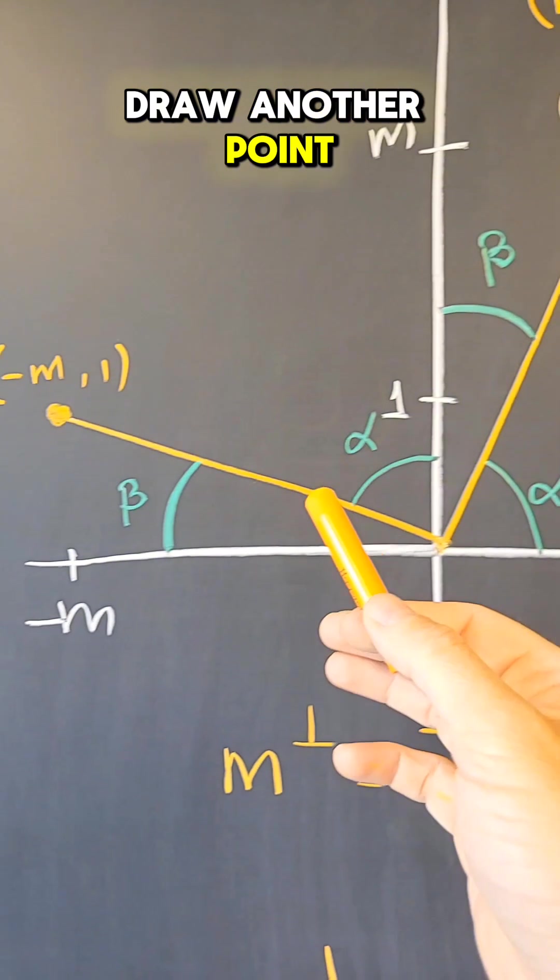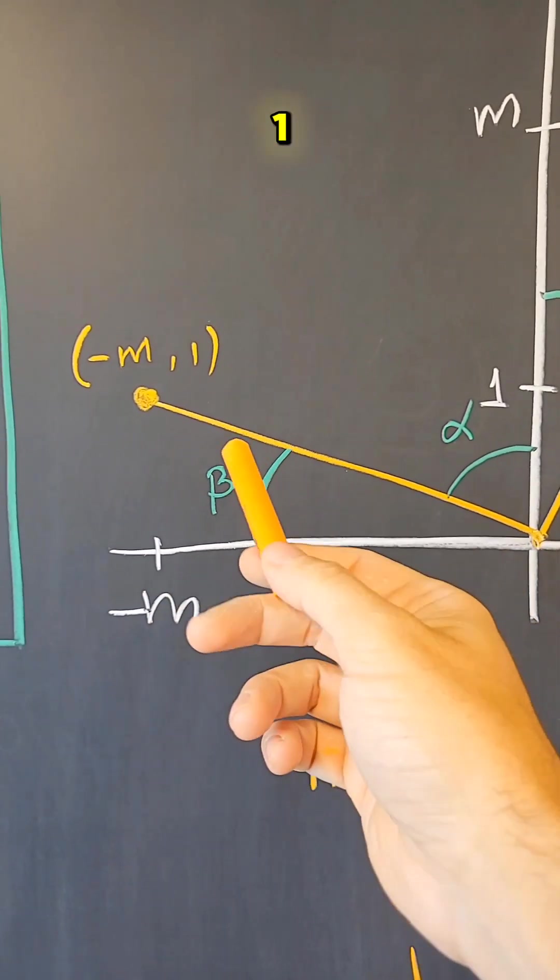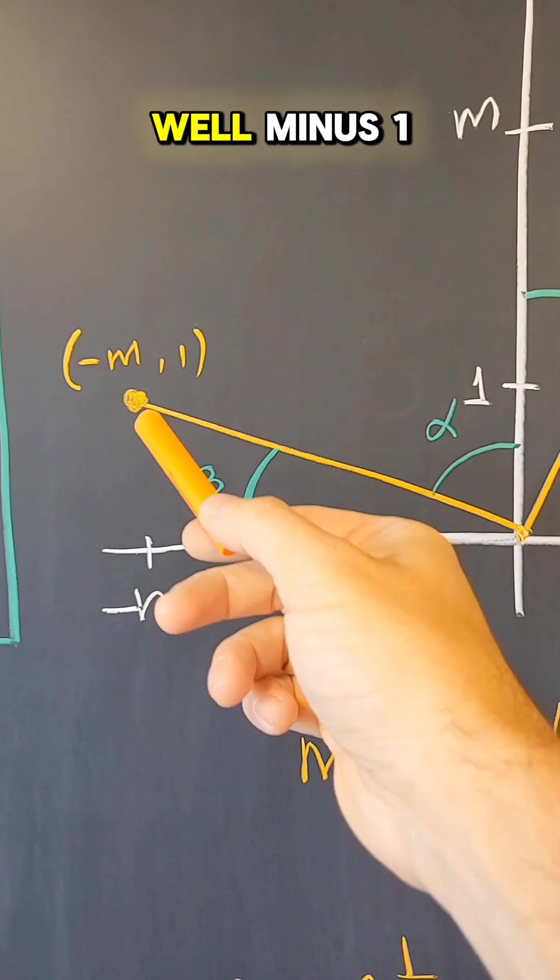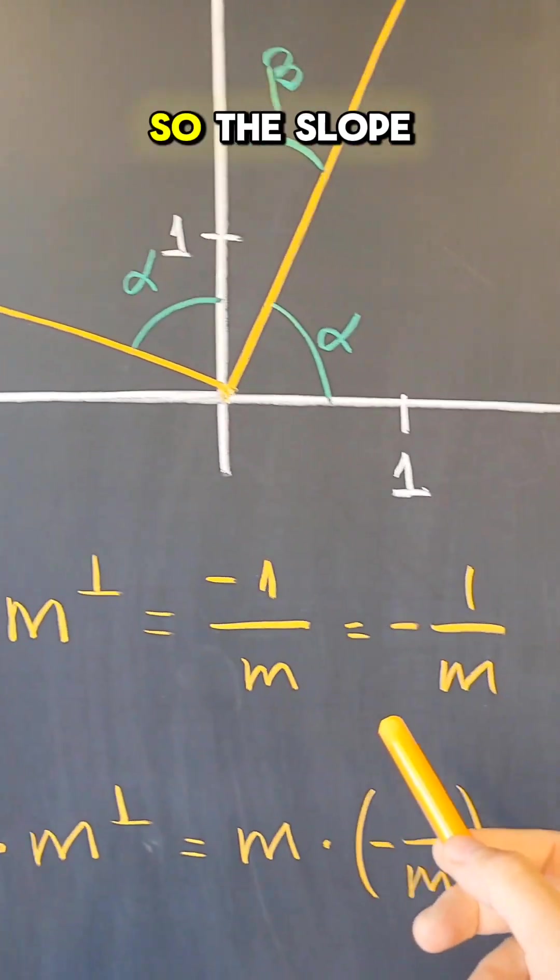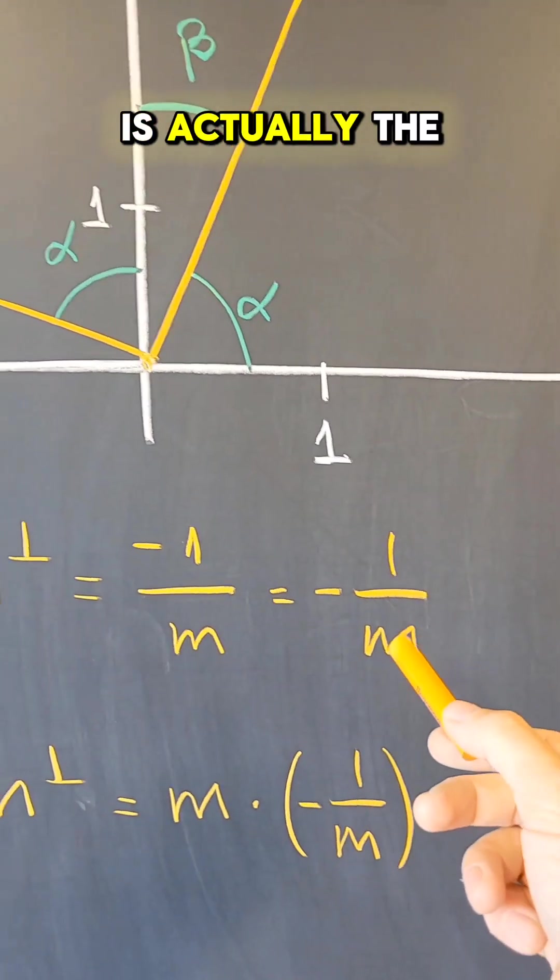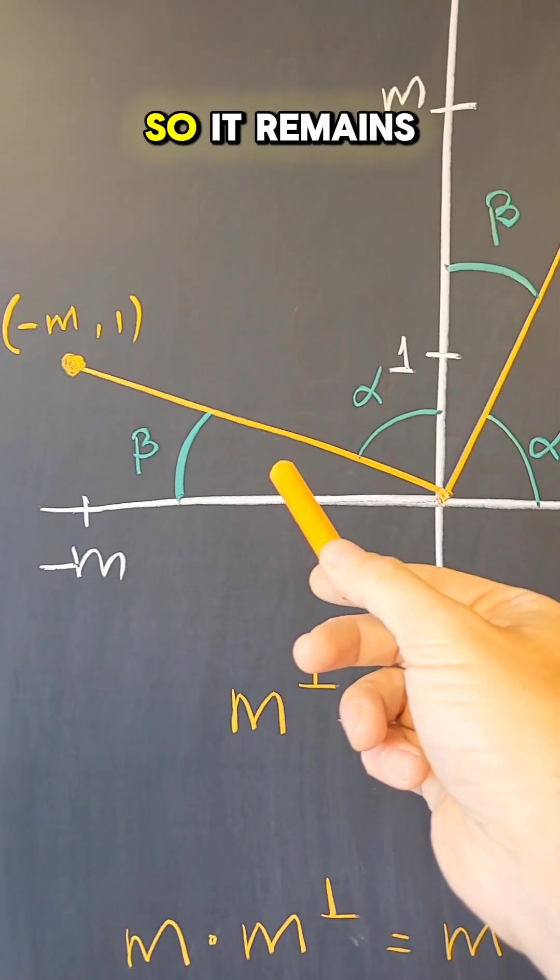Now I can draw another point minus m comma one. And notice that this line here has a slope, well, minus one divided by m. So the slope of this line is what we want to show is actually the perpendicular slope.